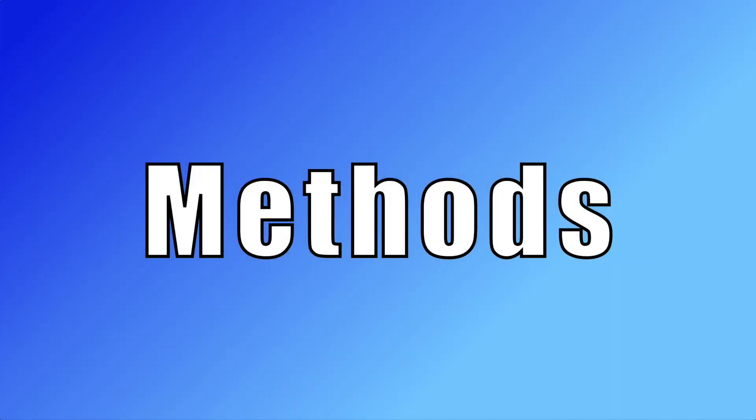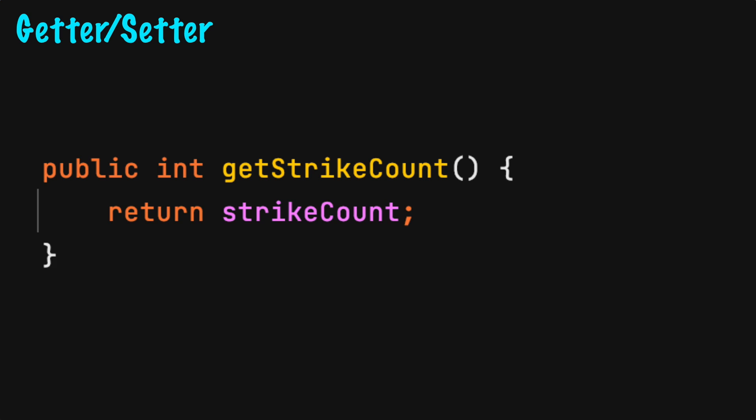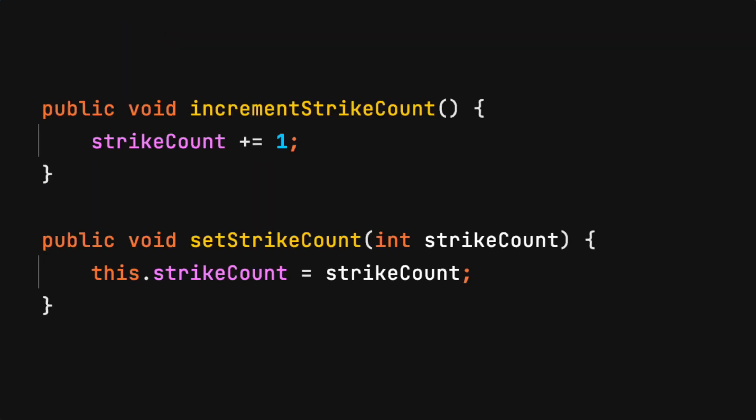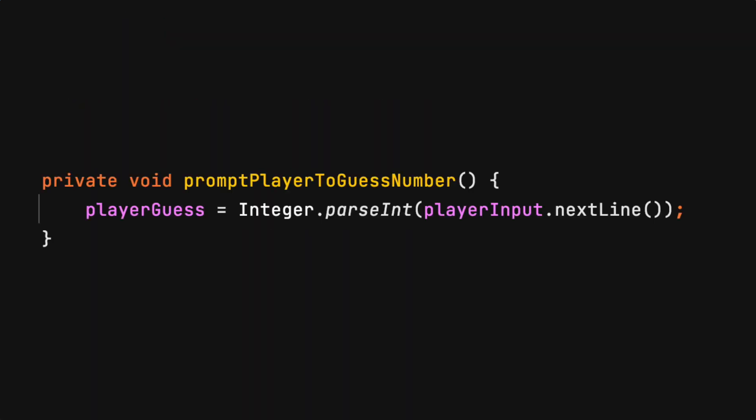Methods can be simplified into four common types that represent a single action. The getter setter method: a return value action occurs with a getter method, typically from a property variable or calculation. An assignment action occurs with a setter method. There are times when both occur.